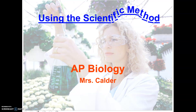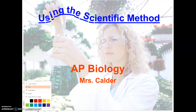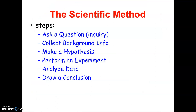Welcome to AP Bio. We're going to jump right into our first lecture, which is going to be about the scientific method. You already probably know quite a bit about the scientific method, so let's run through the general steps. We start with a question we're trying to answer, collect some background information, form a hypothesis — which is an educated guess — then perform our experiment, analyze the data, and draw a conclusion.